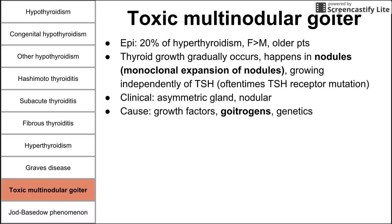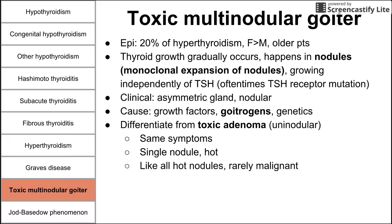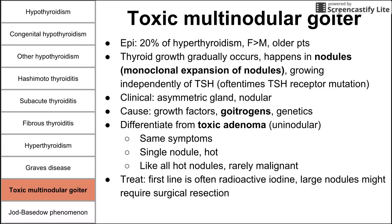Toxic multinodular goiter can be differentiated from toxic adenoma, which is uninodular — one nodule grows large. Both have similar symptoms, but toxic adenoma is a single hot nodule (producing thyroid hormone), while toxic multinodular goiter has many hot nodules. Hot nodules are rarely malignant; thyroid cancers are usually cold nodules. First-line treatment for toxic multinodular goiter is radioactive iodine; large nodules may require surgical resection.